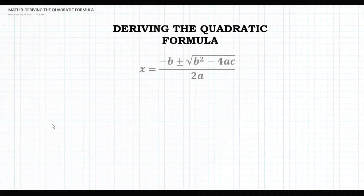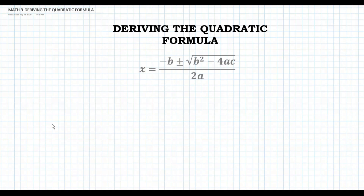Today, we will discuss how to derive the quadratic formula: x equals negative b plus or minus square root of b squared minus 4ac, all over 2a. To derive the quadratic formula, we will do the process of completing the square given the quadratic equation.